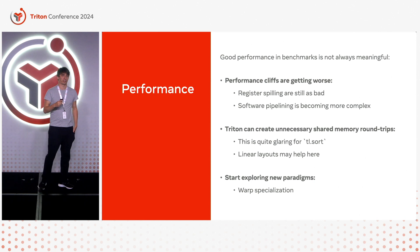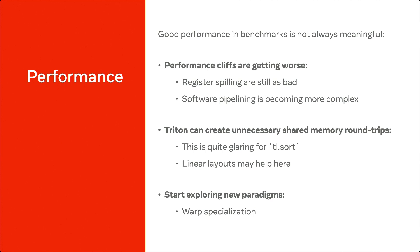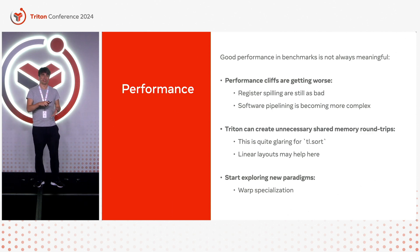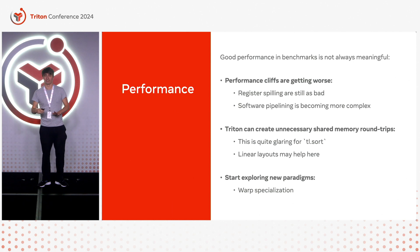On performance — I cheated a little earlier because I showed you a single matrix multiplication kernel. In the real world, things are not simple matrix multiplications. Triton has a very big problem, which is performance cliffs. You can write a Triton kernel, add an instruction, and see performance drop by 20% at best, sometimes much more. Fundamental reasons include register spilling — if your block size becomes too big to fit in the register space, that leads to terrible performance. Software pipelining is also increasingly complex, and as we push more optimizations into the compiler we get bigger cliffs. If the compiler can't prove alignment, it cannot pipeline, you get synchronization in your loop, and it sometimes can't use the latest tensor cores. It's just really bad.